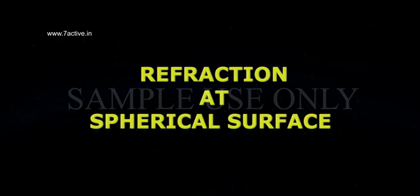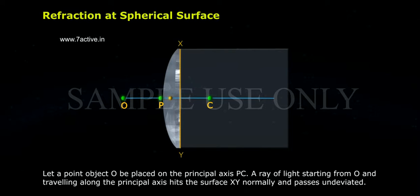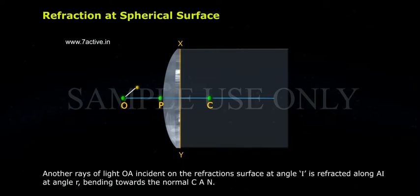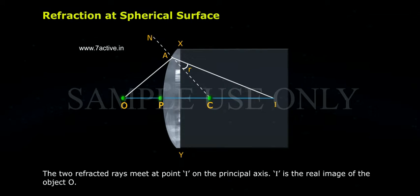Refraction at spherical surface. Let a point object O be placed on the principal axis PC. A ray of light starting from O and travelling along the principal axis hits the surface XY normally and passes undeviated. Another ray of light OA incident on the refracting surface at angle I is refracted along AI at angle R, bending towards the normal CAN. The two refracted rays meet at point I on the principal axis. I is the real image of the object O.